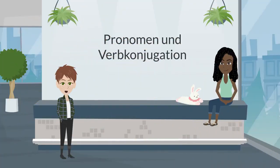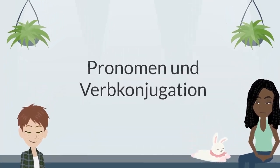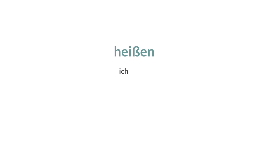Let's first take a look at the pronouns you just heard, and I will then show you how to use verbs in combination with these pronouns. First, you see the pronouns for talking about one person or thing: I, you, he, it, and she. Then you see the pronouns for talking about multiple people: we, you all, and they. And you already know about the formal you — Sie with a capital S — which behaves like the plural they, the sie with a lowercase s.